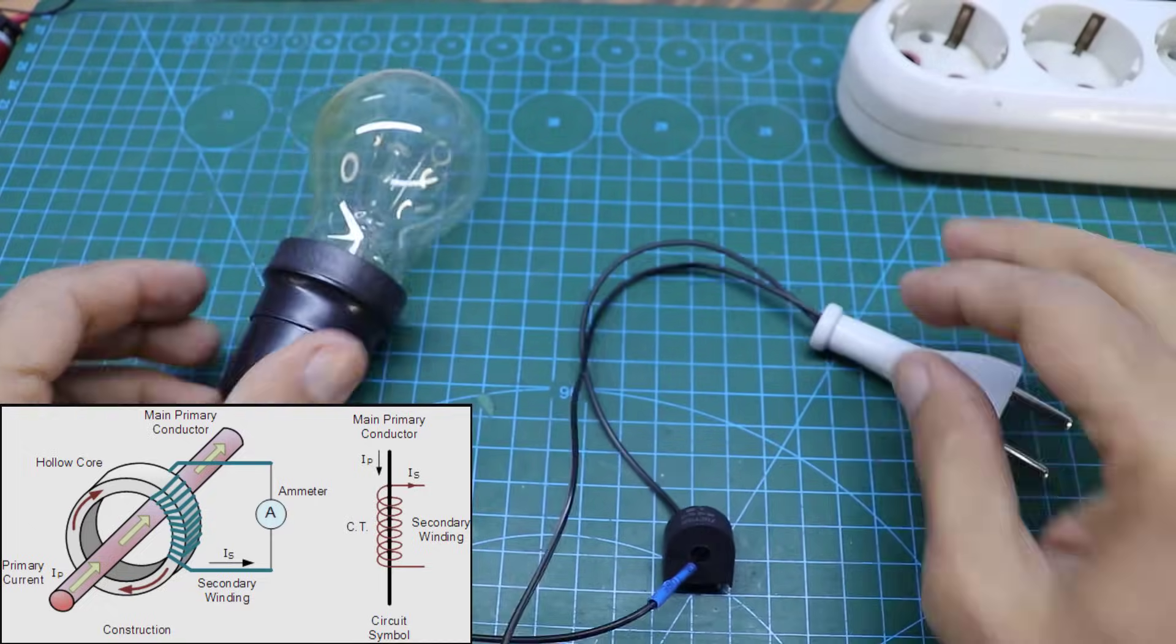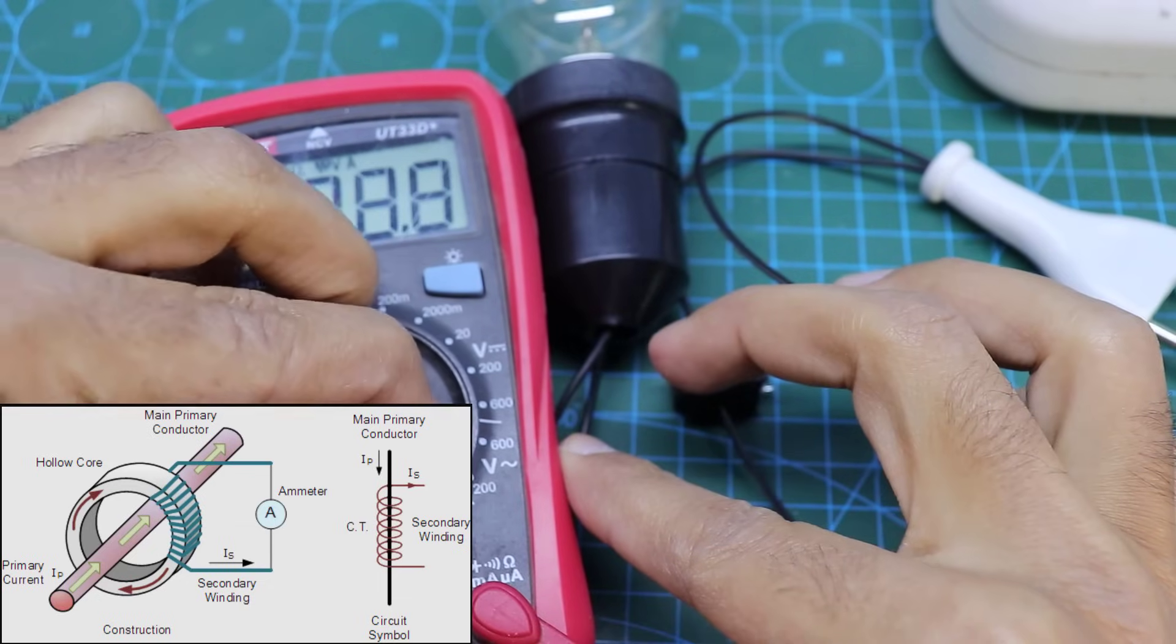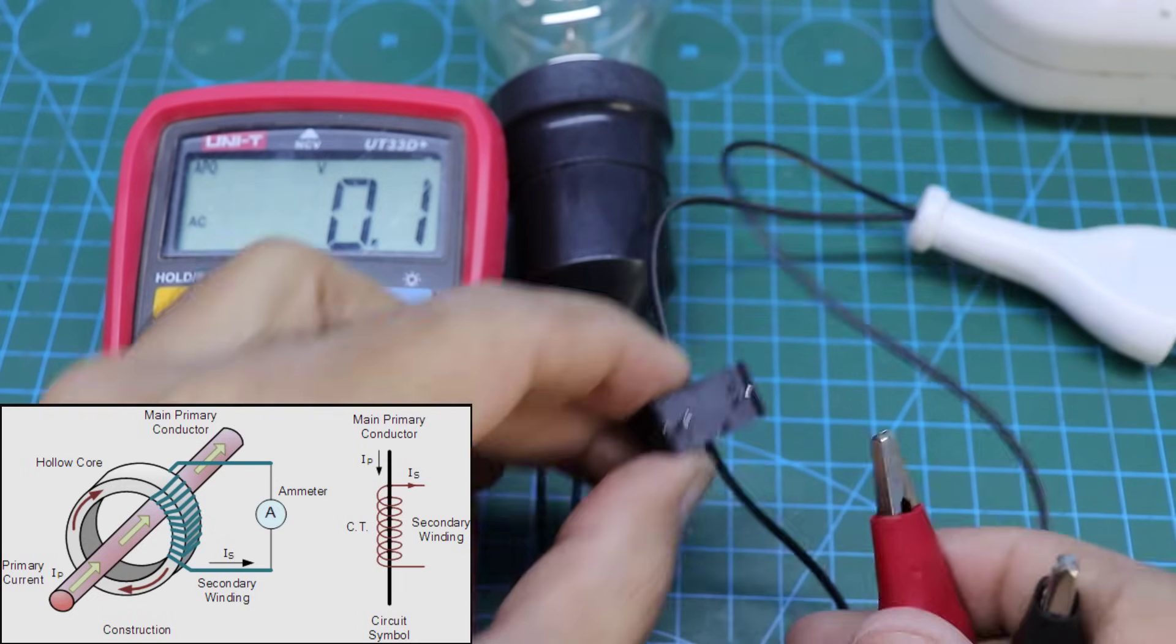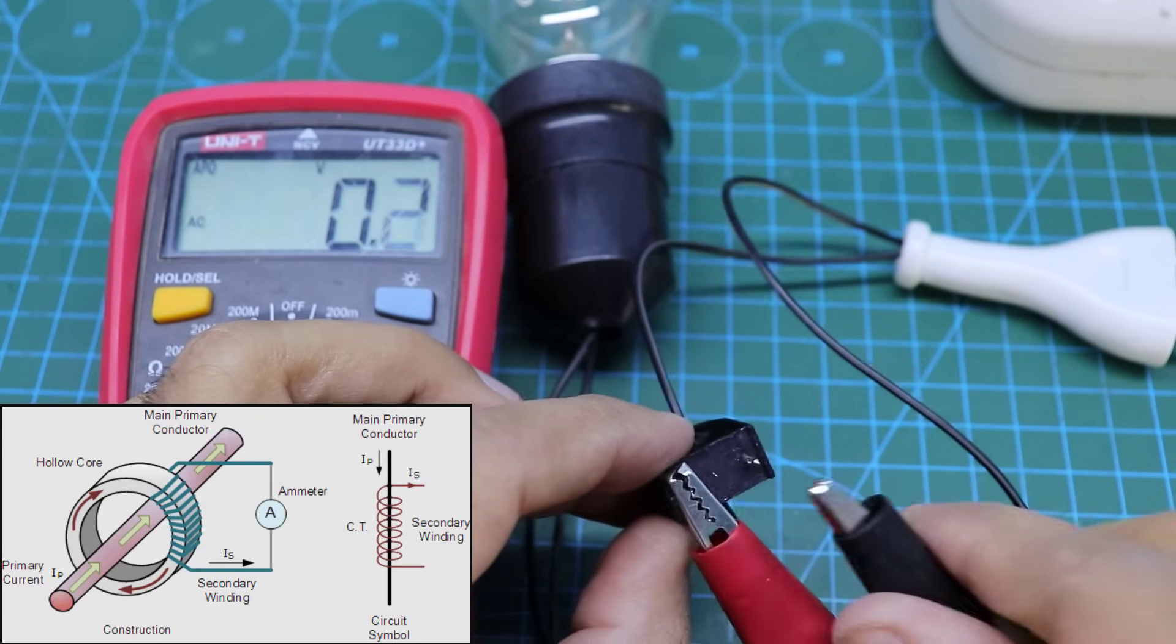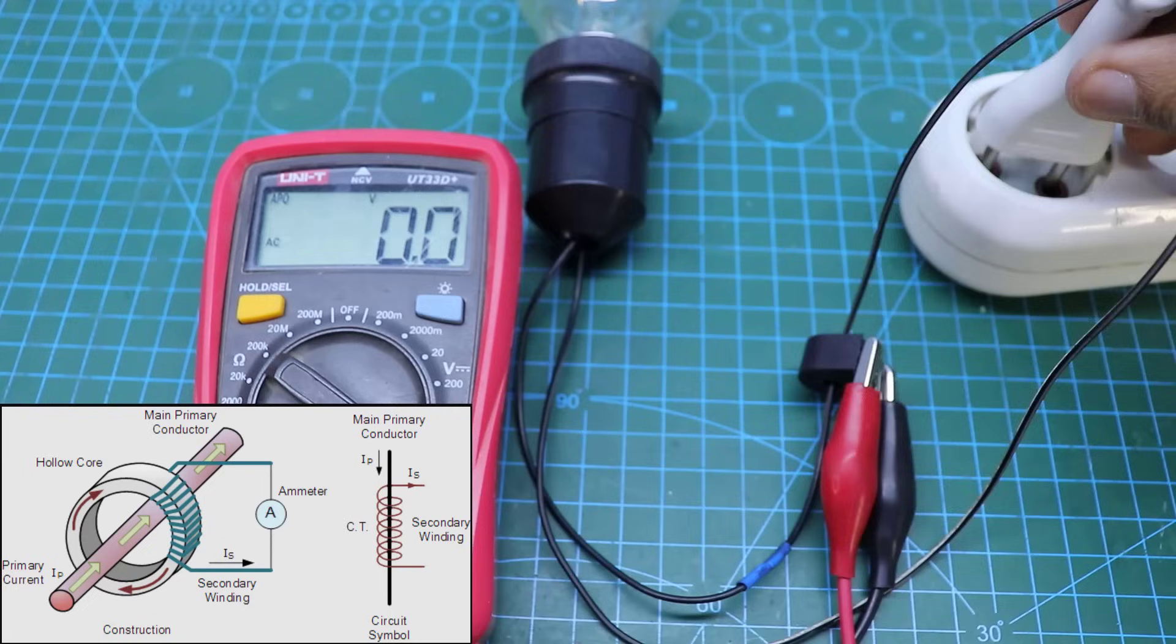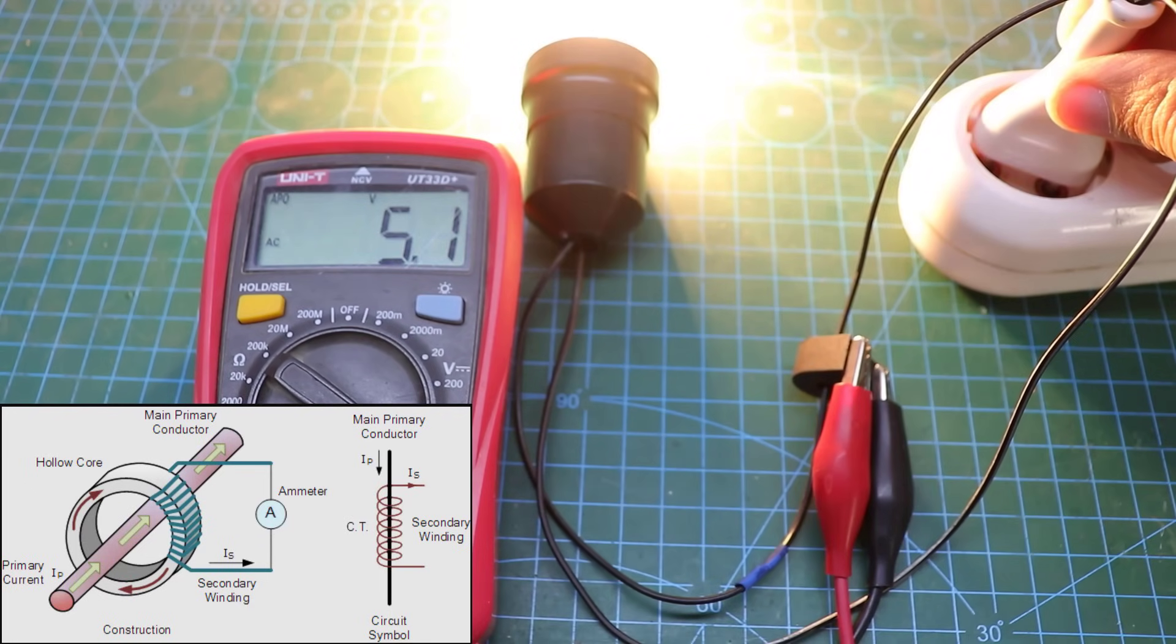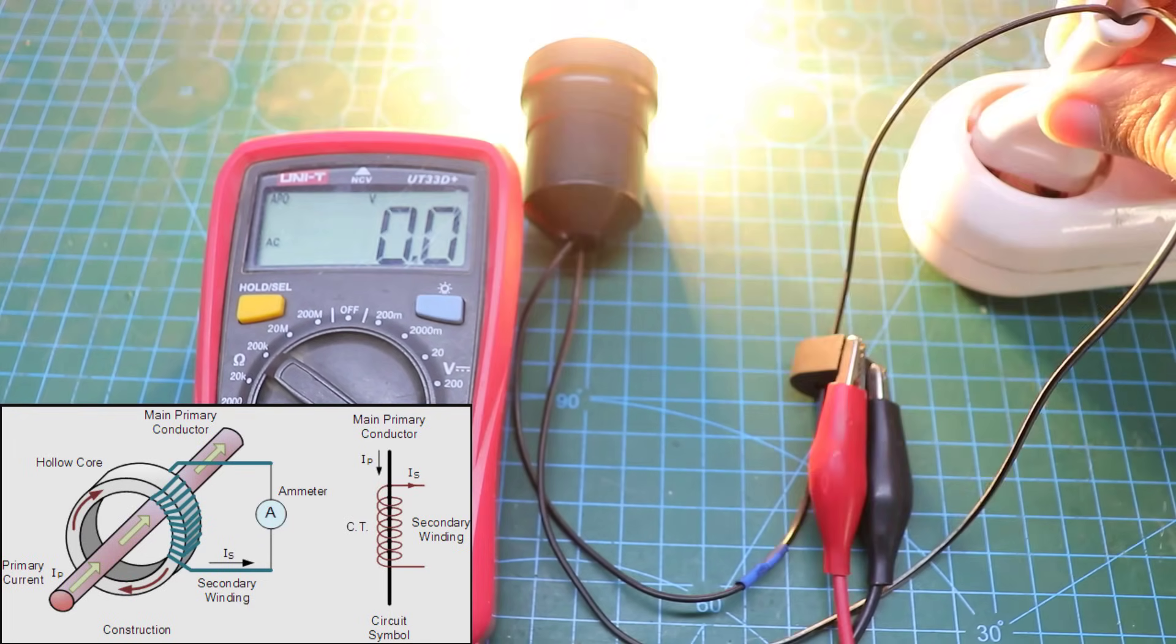The main component in today's video is the current transformer. The current transformer generates a voltage of 5 volts when a current is drawn through the wire passed through its core. You can use a suitable current transformer for your particular project.